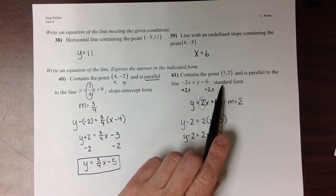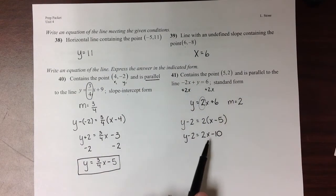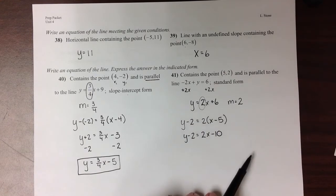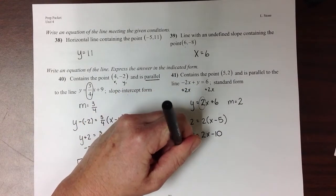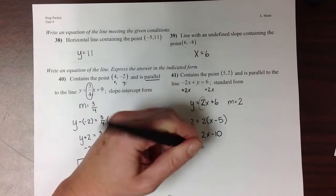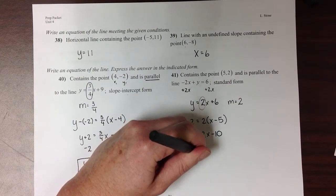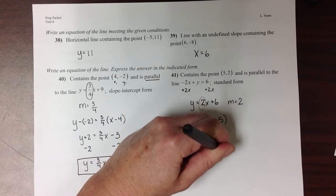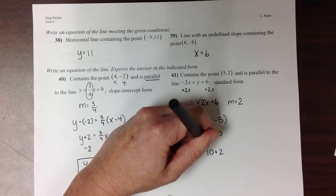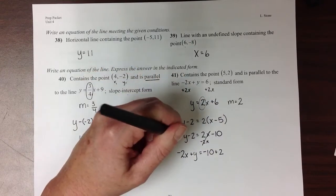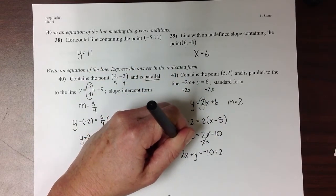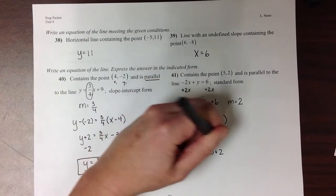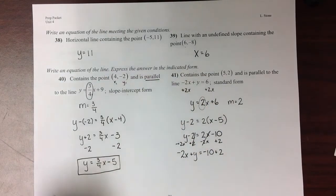Now they've asked for this equation to be in standard form. So this 2x needs to move to the left side and the negative 2 over to the right side. So I'll end up with 2x plus y equals negative 10 plus 2, because I'm removing 2x's from this side and adding 2 to this side.